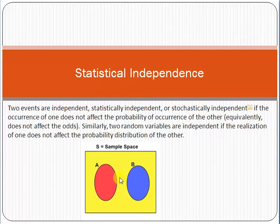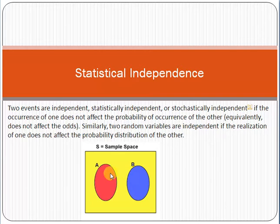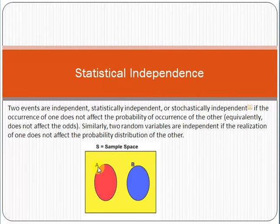Two events are statistically independent if the occurrence of one does not affect the probability of occurrence of the other. Both event A and event B are totally independent of each other — occurrence of event A is totally independent of event B and vice versa. That is called statistical independence.